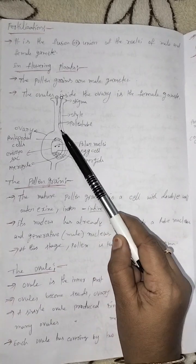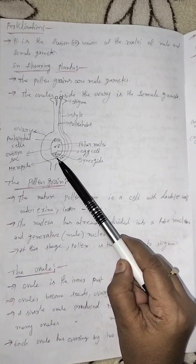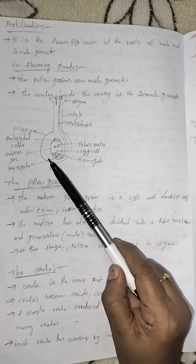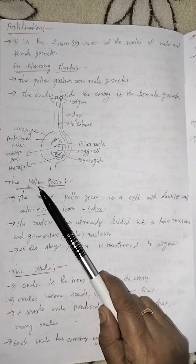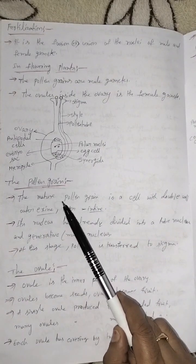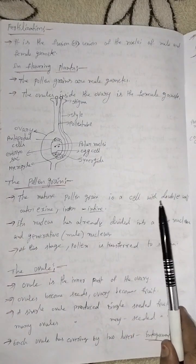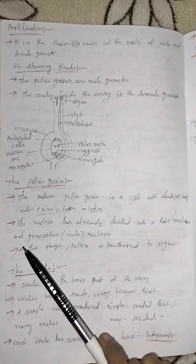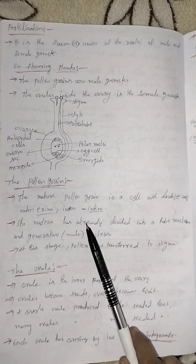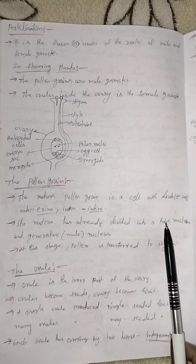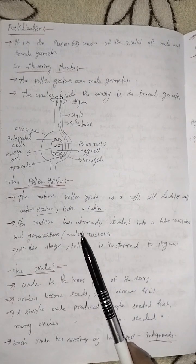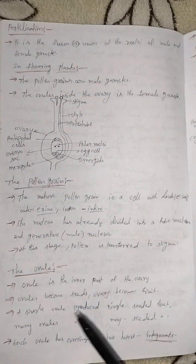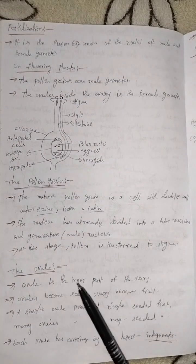The pollen tube enters the ovary through a small hole called the micropyle. The mature pollen grain has a double wall: the outer exine and the inner intine. Its nucleus has already divided into a tube nucleus and a generative male nucleus.